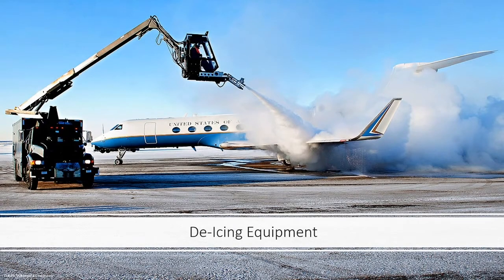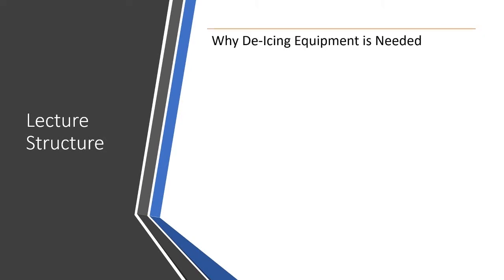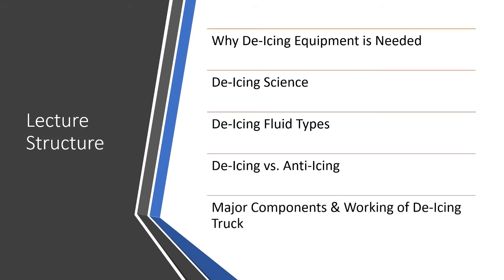We will study aircraft de-icing equipment. We will start our discussion by looking at why de-icing equipment is needed. We will look at de-icing science and discuss different types of de-icing fluids. We will discuss the difference between de-icing and anti-icing, and conclude our discussion on major components and working of de-icing equipment.